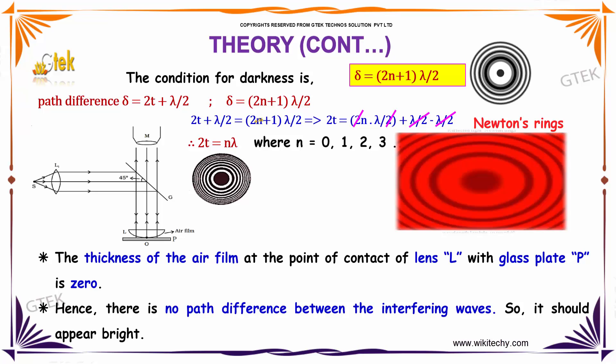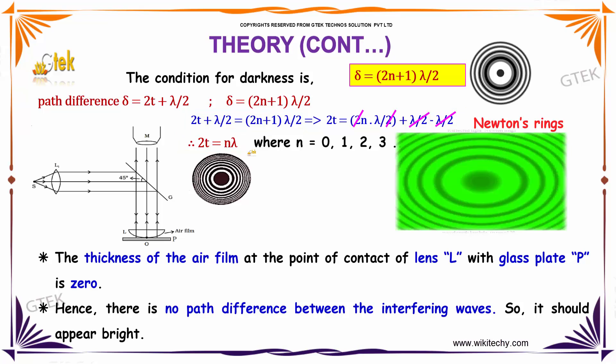Equating these two equations: 2T + λ/2 = (2n+1)λ/2. Plus λ/2 will become minus λ/2 here. Solving this one you will be getting the answer as 2T = nλ.